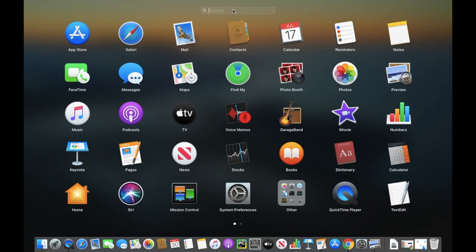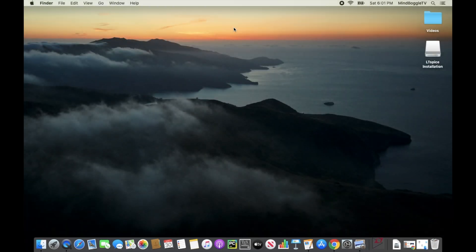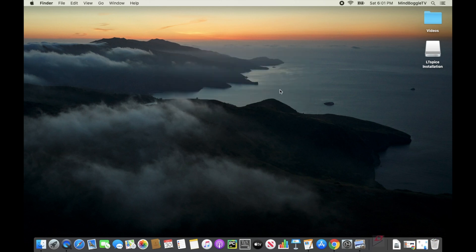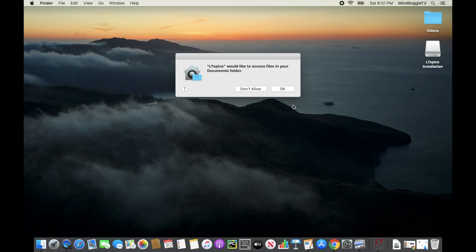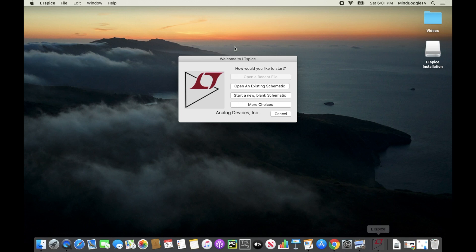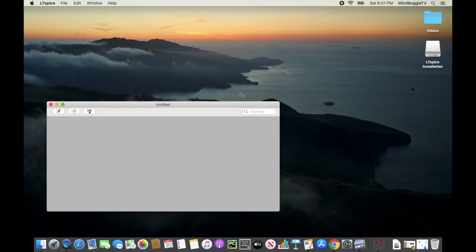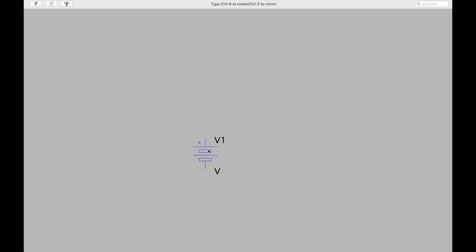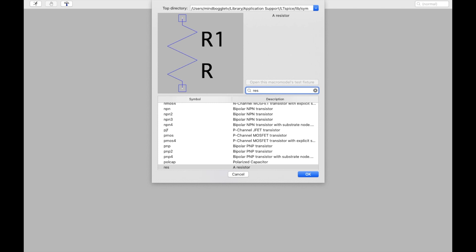Open the application and search LTSpice. Go ahead and start a new blank schematic. Press the function key F2 to open up the components list. Start by adding a battery. Command R to rotate. Add in three resistors from the problem.